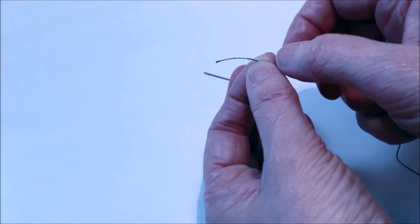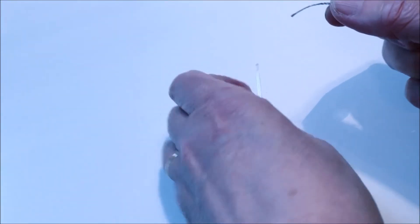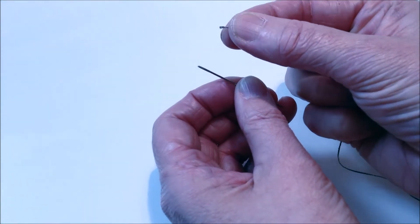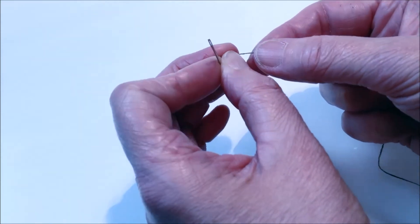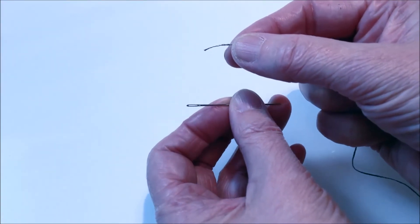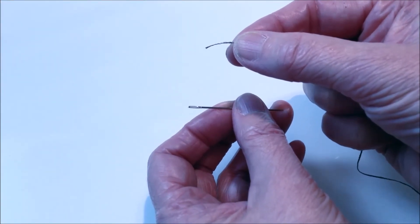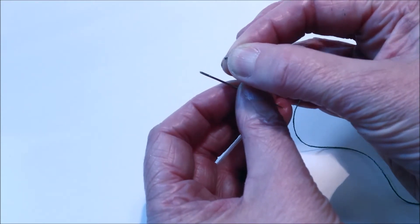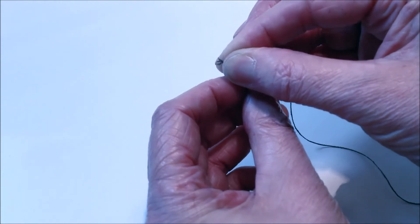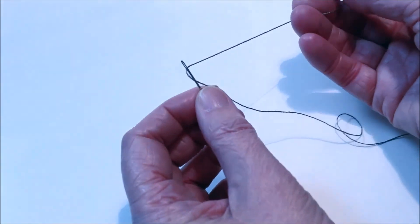A second tip would be to hold the end of the thread very close to your fingers. So often I see people doing this where they've got a good centimeter or so away from their fingers. You want it nice and close so you can squeeze the end of the thread together in order to pop it through the eye of the needle.